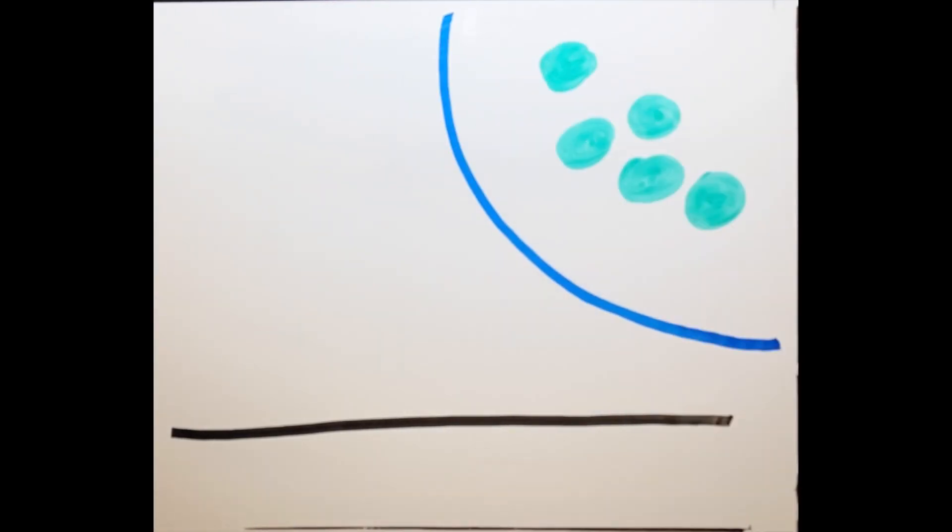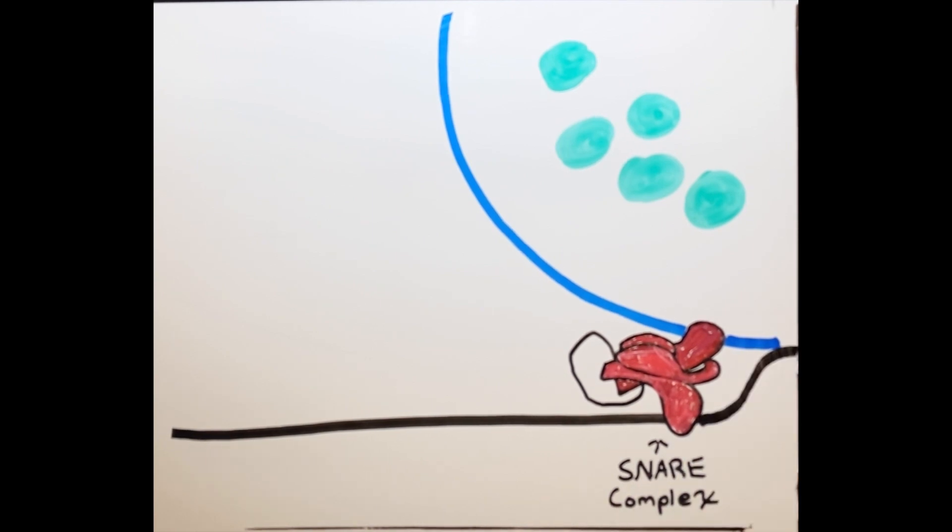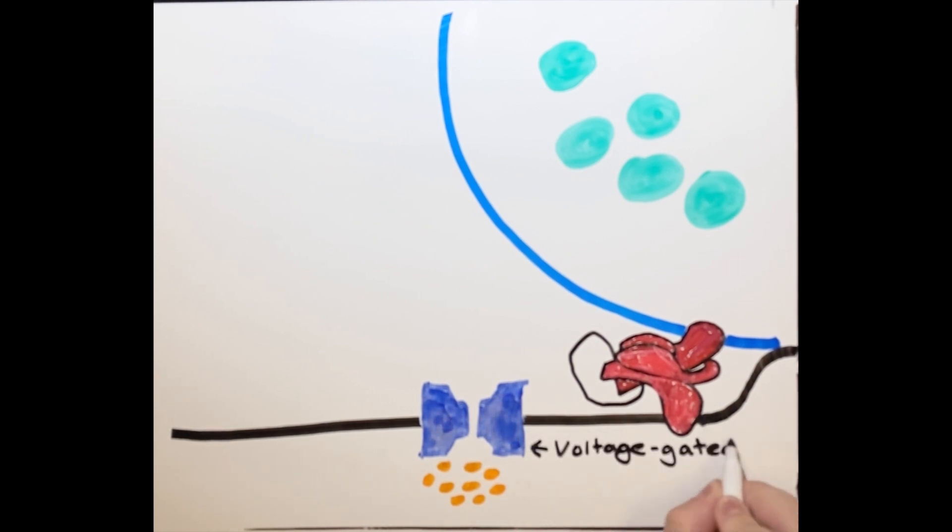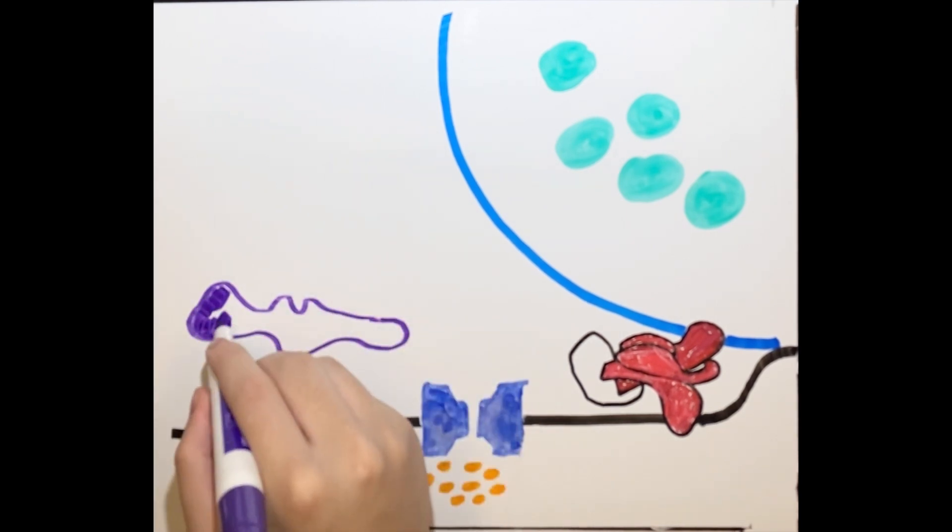Although the membranes are nearly touching at this point, they cannot be fused without another process taking place. This process is called Ca2+ triggering. In this process, calcium flows in through voltage-gated calcium channels that are open upon an action potential reaching the axon terminal. To make sure that the calcium channels are near the vesicle during binding, several proteins are connected together to keep the channel next to the vesicle.